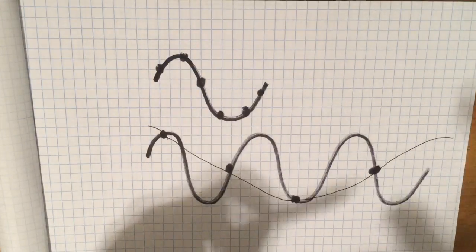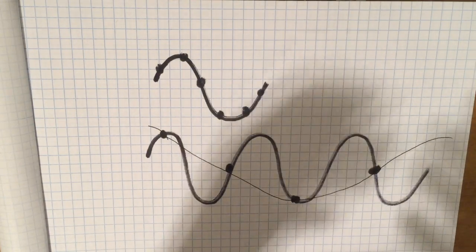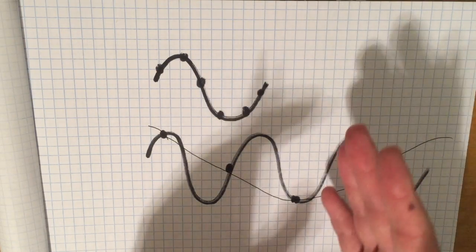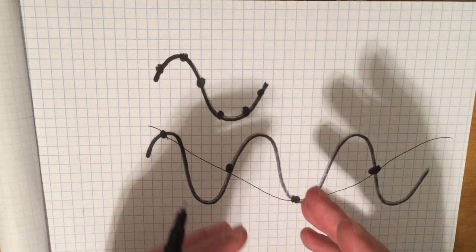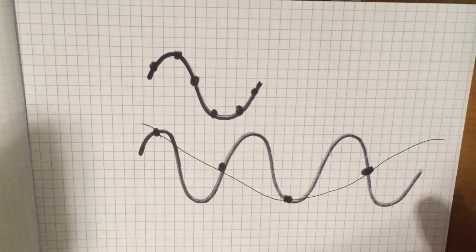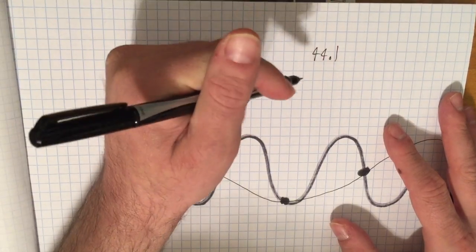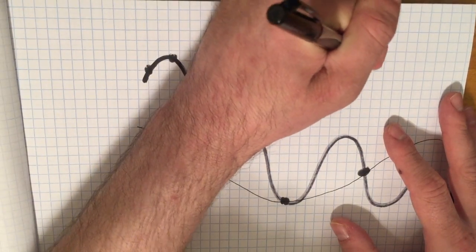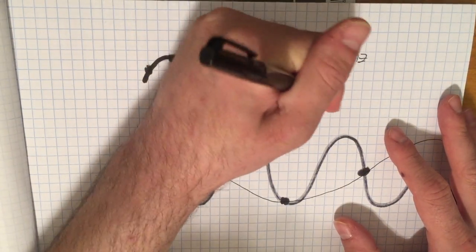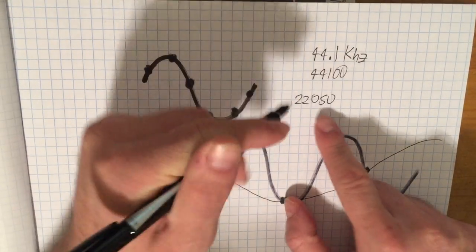Usually people say that the highest frequency that can be represented in a sampled signal is one-half the sampling rate. That's called the Nyquist frequency after the Nyquist-Shannon sampling theorem which describes this phenomenon. So if you're at 44 kilohertz, 44.1—44,100 times a second—divide that by two, that means our highest frequency is 22,050.